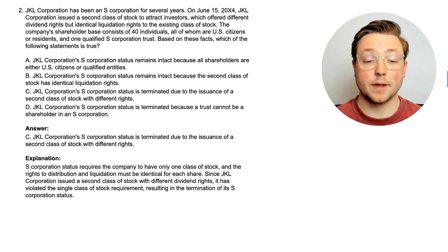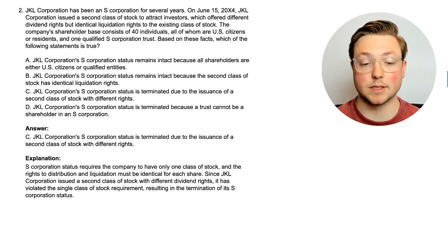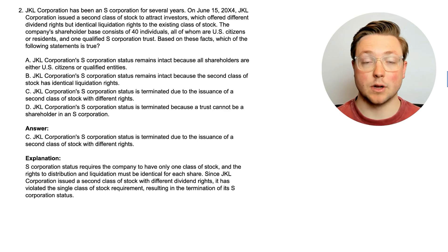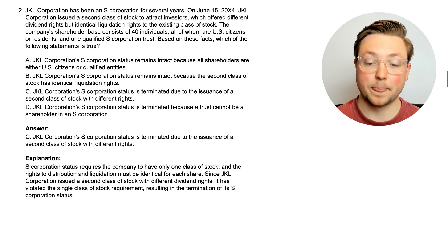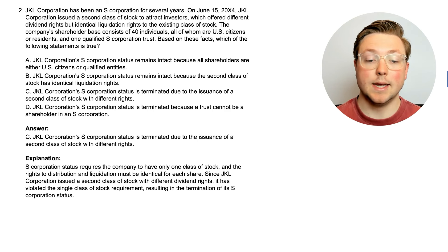JKL Corporation's S-corporation status is terminated due to the issuance of a second class of stock with different rights. We learned that they can only have one class of stock. S-corporation status requires the company to have only one class of stock, and the rights to distribution and liquidation must be identical for each share. Since JKL Corporation issued a second class of stock with different dividend rights, it has violated the single class of stock requirement, resulting in the termination of its S-corporation status. If they have more than one class of stock, that terminates their S-corporation status.